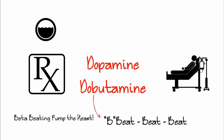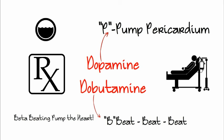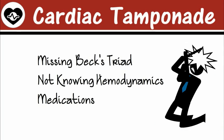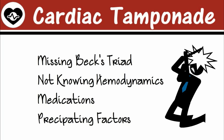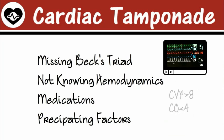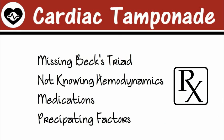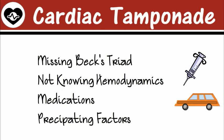Dobutamine — B, B, B — and dopamine — P for pericardium, where the fluid is. Some common NCLEX traps include: missing the 3 Ds of Beck's Triad — decreased blood pressure, decreased heart sounds, distended jugular veins; not knowing your hemodynamic ranges — CVP 4 to 8 would be elevated with cardiac tamponade, cardiac output 4 to 8 would be decreased with cardiac tamponade; not knowing what medications might be ordered, like dopamine or dobutamine; and not recognizing that the patient's history would put them at risk for cardiac tamponade.